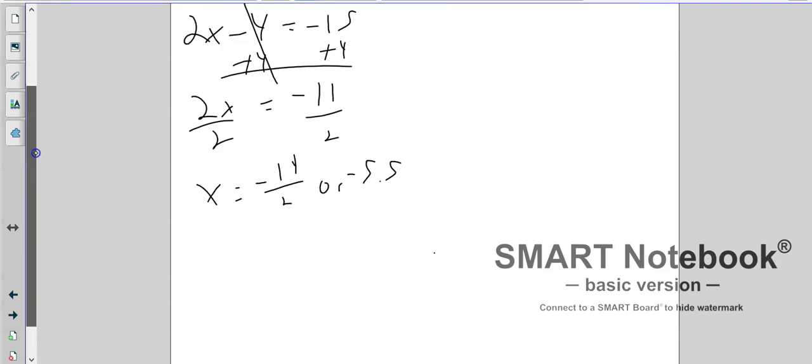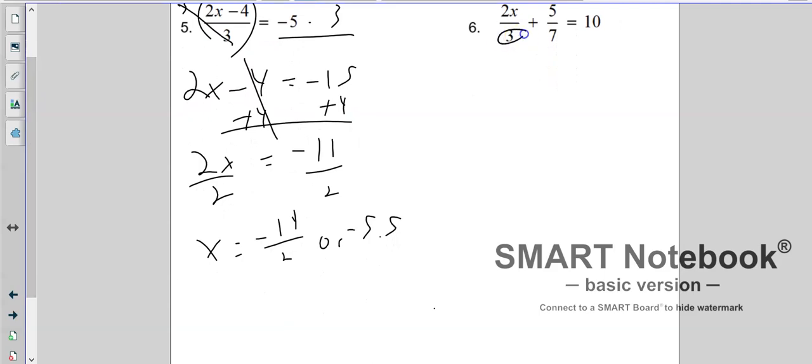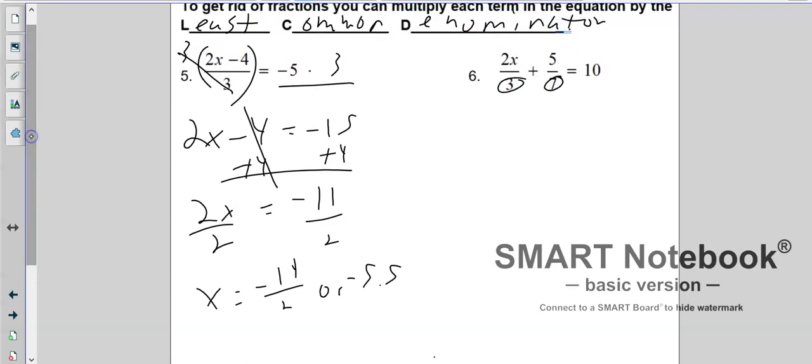Now, here on this next problem is where the least common denominator comes in. If we look at the 3 and the 7, we want to get rid of this. But if I multiply by 3, that won't help with the 7. If I multiply by 7, it won't help with the 3. So I need the common denominator of 3 and 7, and I want the least one, the smallest one. So if I count by 3s and count by 7s: 3, 6, 9, 12, 15, 7, 18, 21. Bingo. There is my magic number. So I need to multiply this fraction by 21, this fraction by 21, and this side by 21. Now watch what happens. The 3 cancels into the 21 seven times. So what I'm left with is 7 times 2x. 7 goes into 21 three times, so I'm left with plus 5 times 3. Equals 210.